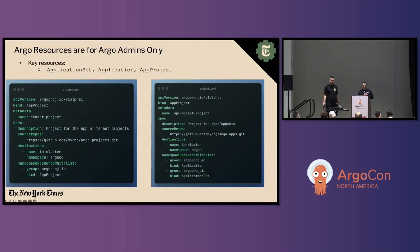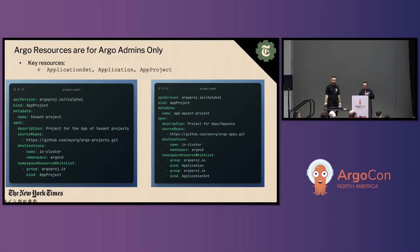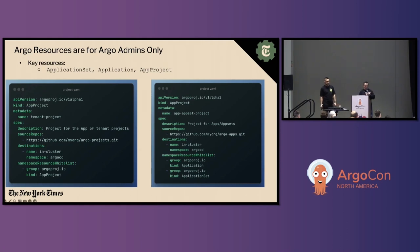Argo resources are for Argo admins only. Resources like application set, application, and app project should have dedicated projects for just these resources. We need to ensure that only those truly authorized — such as Argo CD administrators — have the power to merge pull requests to these pivotal repositories. Here are a couple of examples of how we separated out our own repos and how they get loaded in.